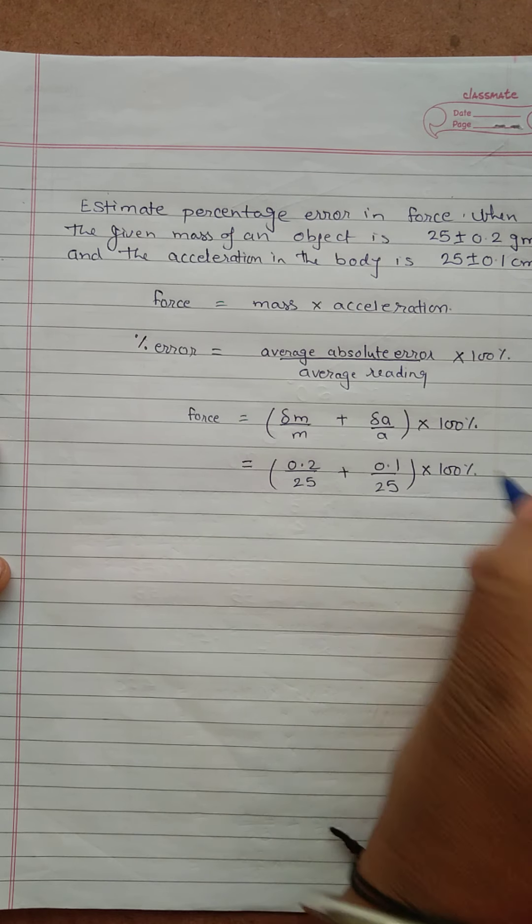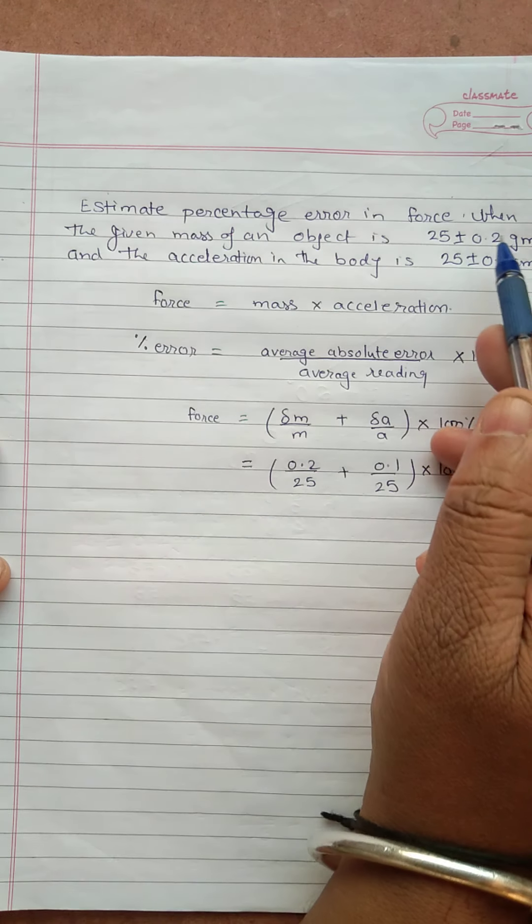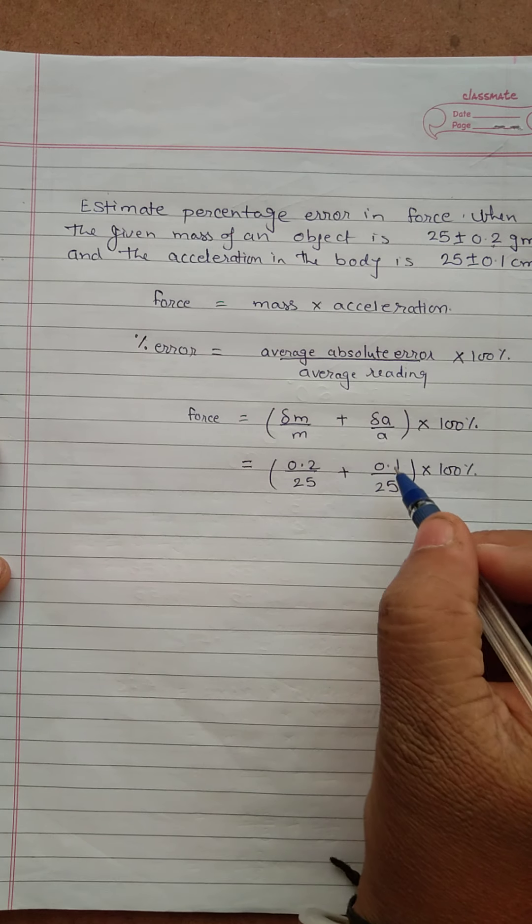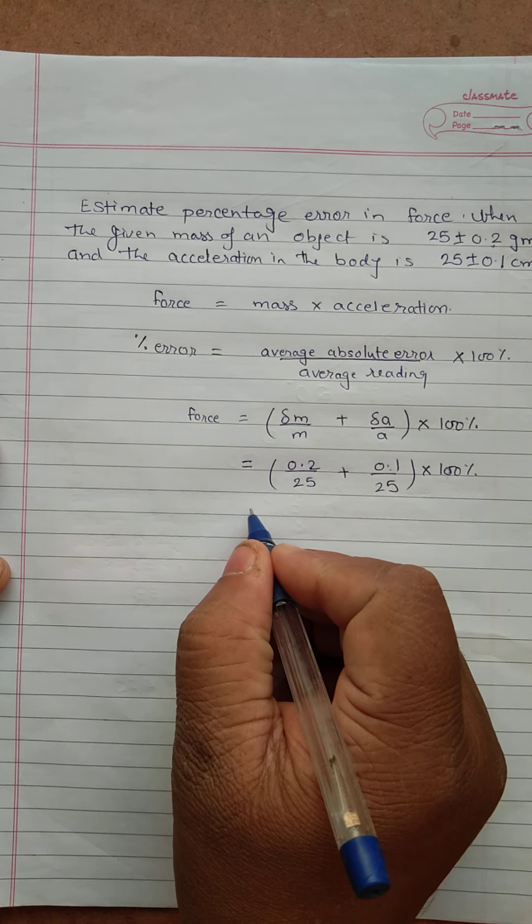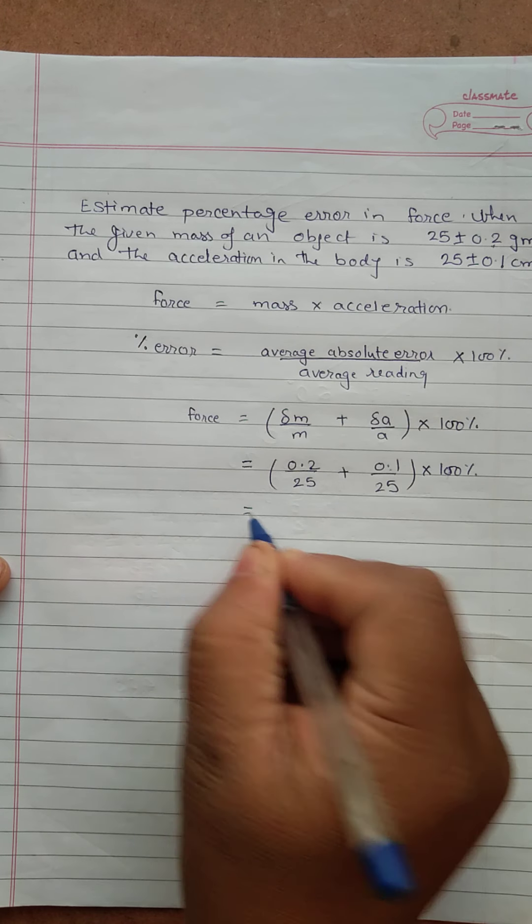0.2, this is the delta m. 0.1, which is the delta a in the equation. And now we will solve it further.